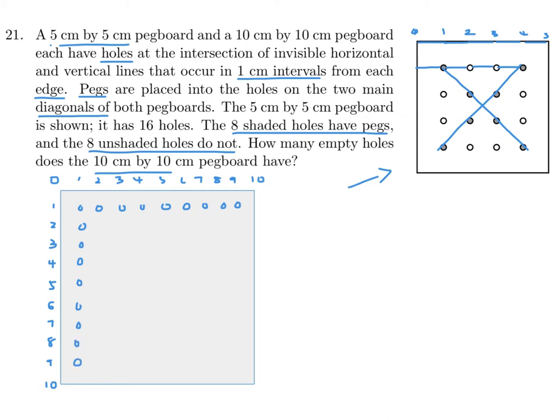It looks like there's a 9-by-9 grid of holes, so 9 times 9 equals 81 total holes in this 10x10 pegboard. Now we have to figure out how many of those 81 are shaded — those are the ones on the diagonal.